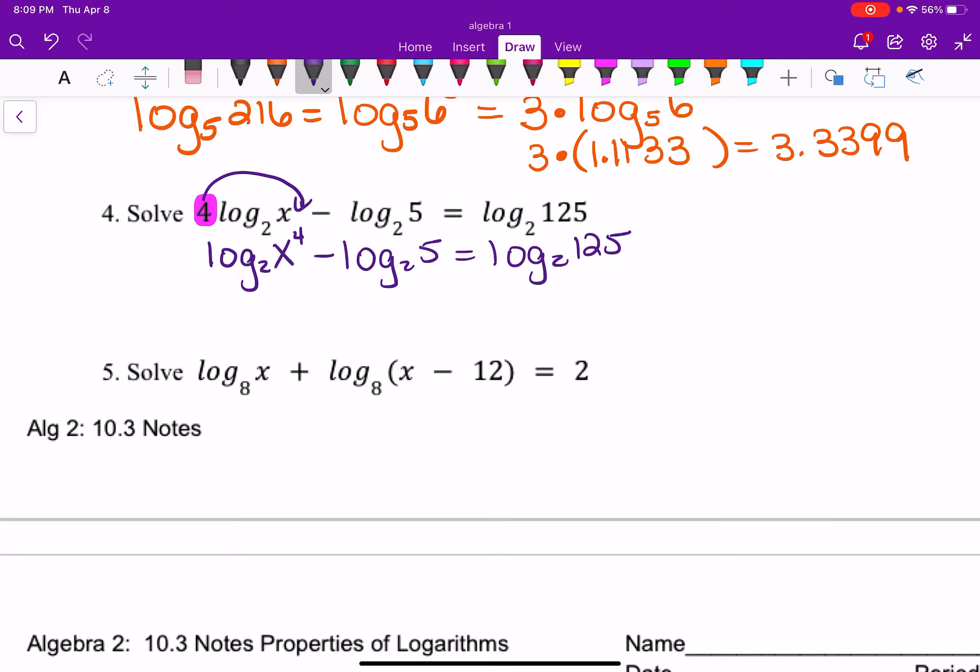Well, what did I tell you? If we're dealing with logs, that's the same as we can put them together as a division problem. So this would be log base of 2 x to the 4th over 5 equals log base 2 of 125. Now we have log equal log. Once we have log equal log, we can do this.